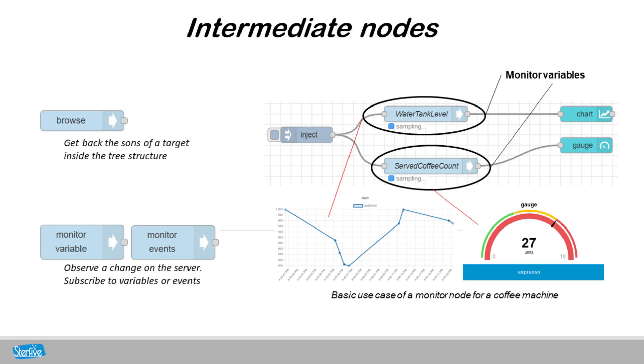For intermediate users, with the browse node, you can get back the sons of a specific target inside the tree structure. The monitor nodes allow you to observe a change on the server, either variables or events.